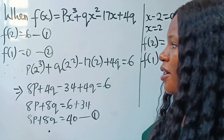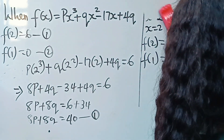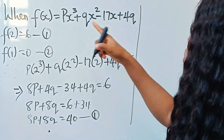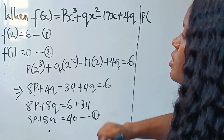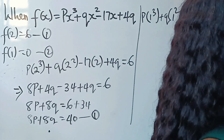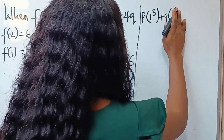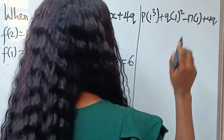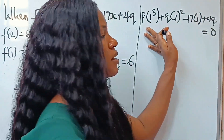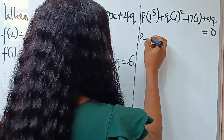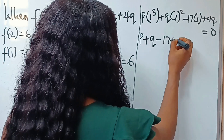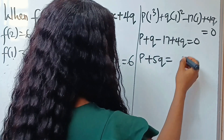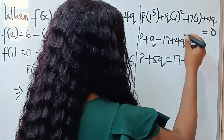Now let's form equation two. We are told f(1) equals zero, so we substitute one everywhere: p times one cubed plus q times one squared minus 17 times one plus 4q equals zero. This simplifies to p plus q minus 17 plus 4q equals zero, giving us p plus 5q equals 17. This is our second equation.